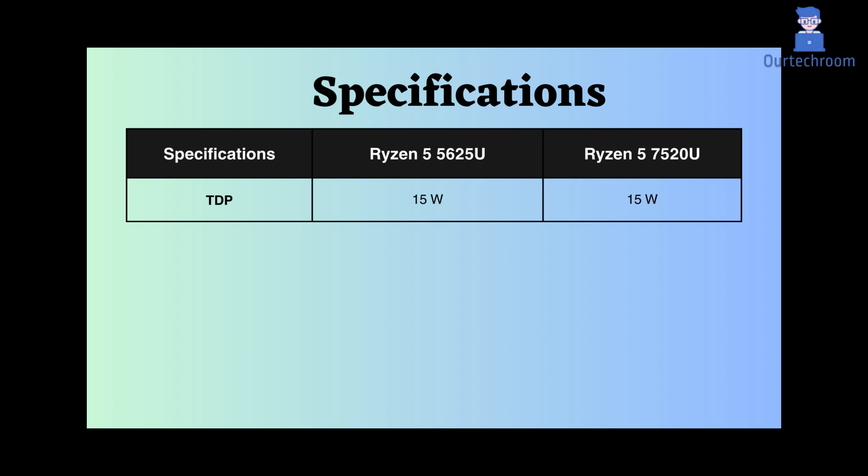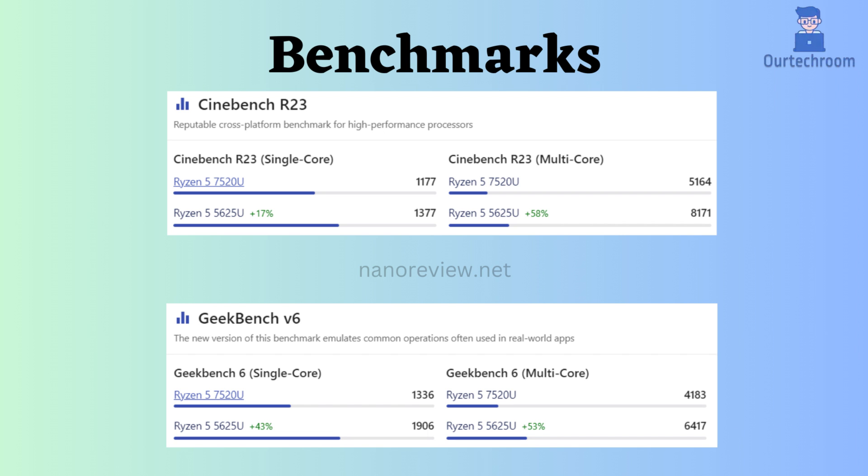In terms of benchmark comparison, the Ryzen 5 5625U appears to be significantly better in Cinebench R23 and Geekbench V6 for both single-core and multi-core performance.